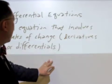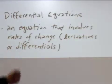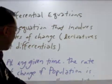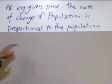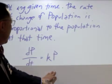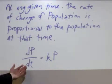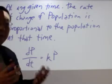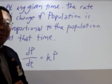Let's look at the population situation here. A differential equation is an equation that involves rates of change as derivatives or differentials. We know that at a given time, the rate of change of population is proportional to the population. So how do we express that mathematically? We have dp/dt is equal to kp. That is, the rate of change of population with respect to time is equal to kp — a mathematical expression of the notion that the rate of change of population is proportional to the population.